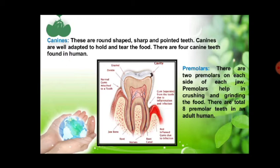Then we are having premolars. There are 2 premolars on each side of each jaw, which means we are having a total of 8 premolars in an adult human. They are used for grinding and chewing of the food. Premolars are involved in the crushing and grinding of the food, and basically premolars and molars both have the same function.